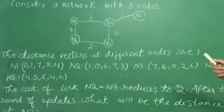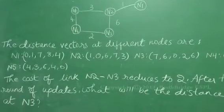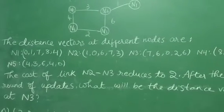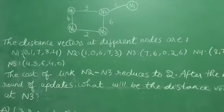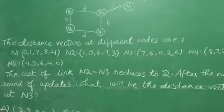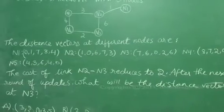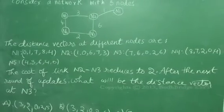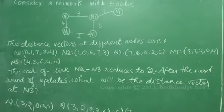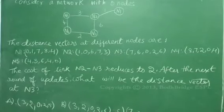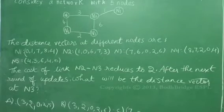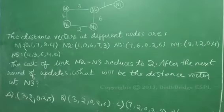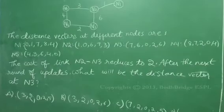The distance vectors at different nodes are: N1 is [0, 1, 7, 8, 4], N2 is [1, 0, 6, 7, 3], N3 is [7, 6, 0, 2, 6], N4 is [8, 7, 2, 0, 4], and N5 is [4, 3, 6, 4, 0].